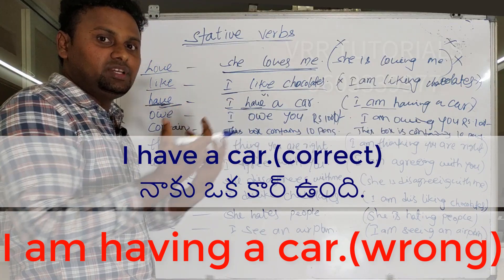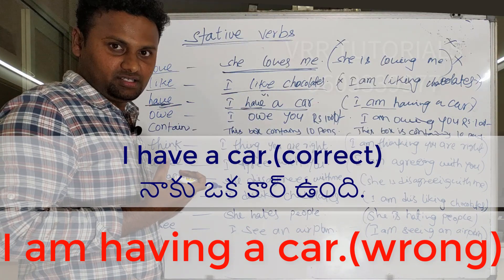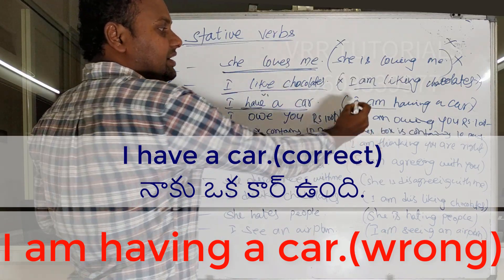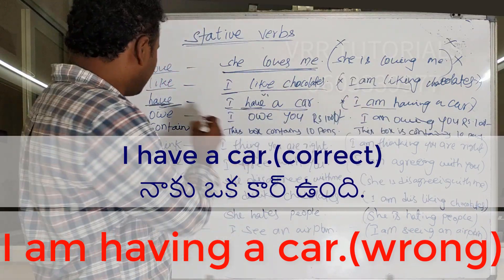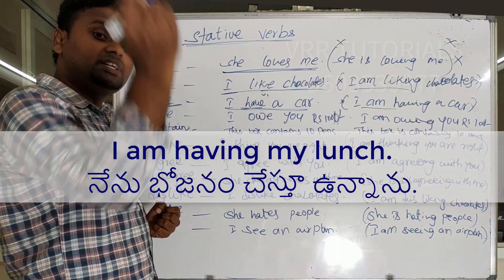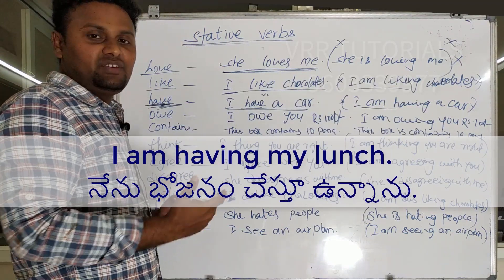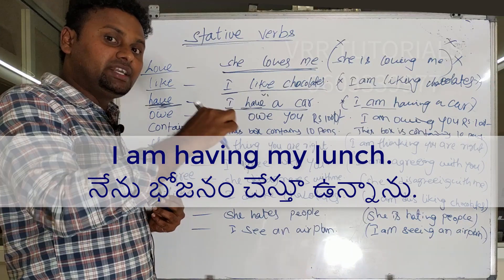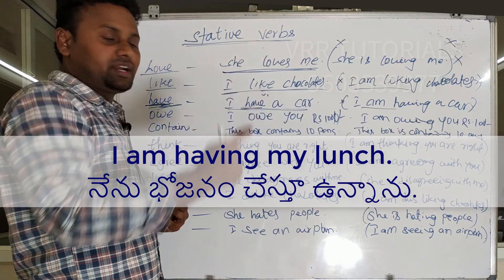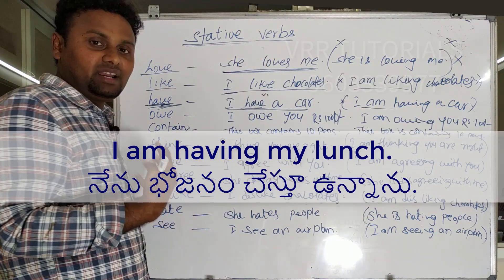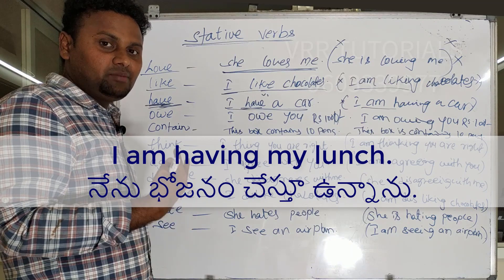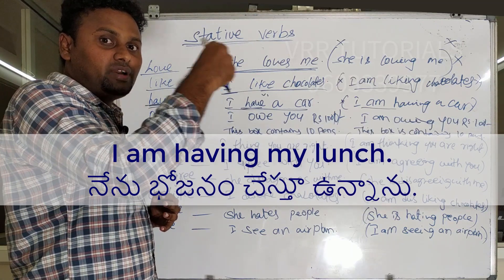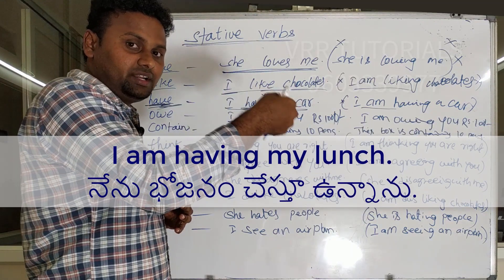When 'have' goes to the dynamic verb, we say: I am having my lunch. That is correct. In dynamic use, 'I am having my lunch' is correct because here 'having' describes an action — what you are doing. So 'I am having my lunch' is acceptable as a dynamic verb.